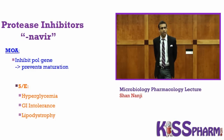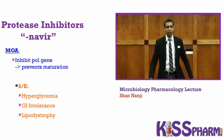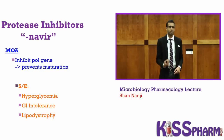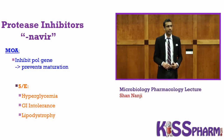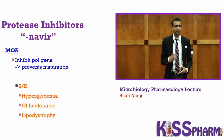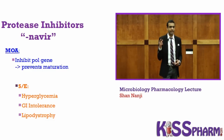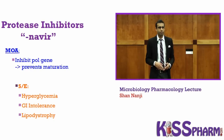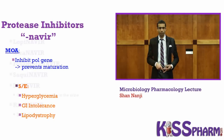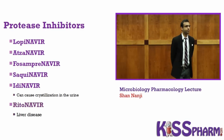Next are protease inhibitors — you never tease a protease. All protease inhibitors have the 'Navir' sound (N-A-V-I-R). They inhibit the pol gene — P for protease, P for pol gene, P for prevent maturation. Side effects include hyperglycemia, GI intolerance, and lipodystrophy.